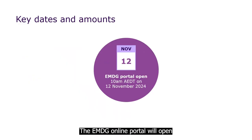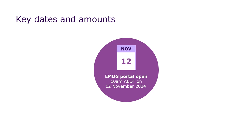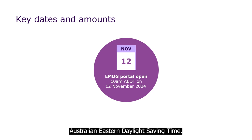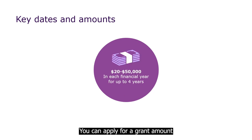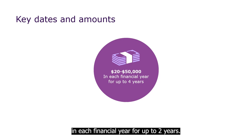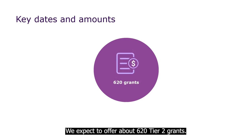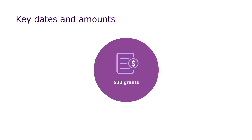The EMDG online portal will open for applications on Tuesday, November 12, 2024 at 10am Australian Eastern Daylight Saving Time. You can apply for a grant amount of between $20,000 and $50,000 in each financial year for up to two years. We expect to offer about 620 Tier 2 grants.